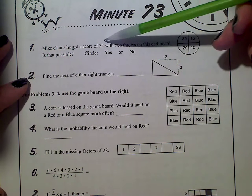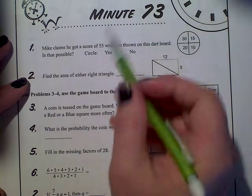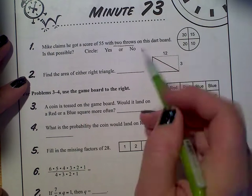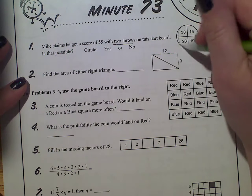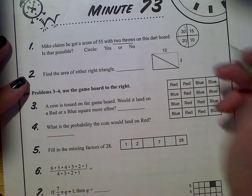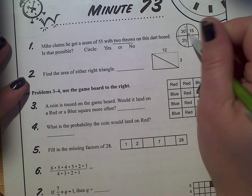Mike claims he got a score of 55 with two throws. This is important, two throws on this dartboard. Is that possible? So two scores, you can go for the two highest. So with 30 and 20, he can get 50. So right away, you should know.